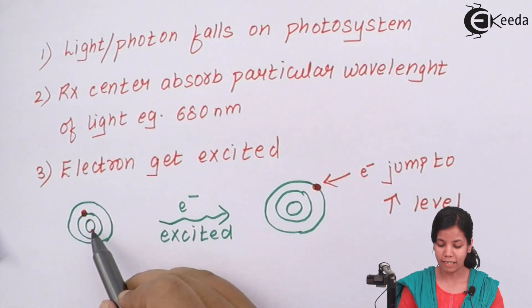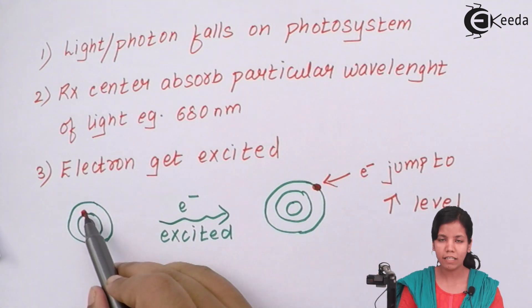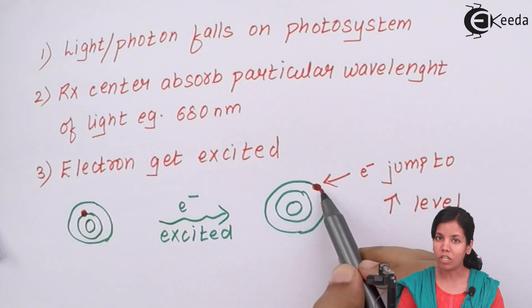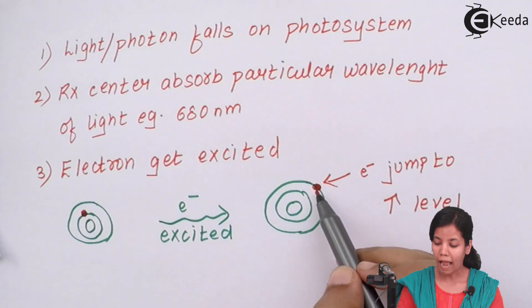That is, if an electron is present in its lower shell or near the nucleus, once it absorbs energy, the electron will jump to the higher shell, and this jump of the electron is due to the excited electron.